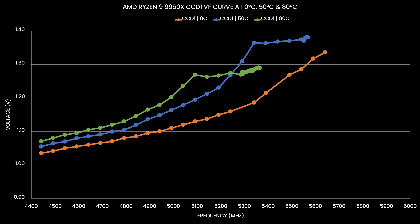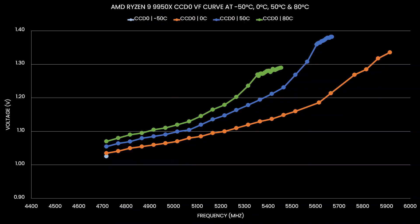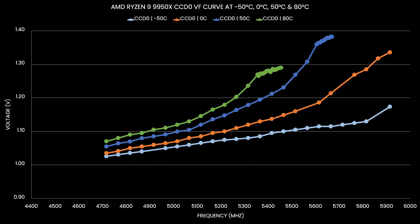This also holds true for CCD1 — at 1.2V we get almost 5.4 GHz at 0°C, but only 5 GHz at 80°C. The cool thing, literally, is that Precision Boost also scales with negative temperatures. Check out the VF curve at minus 50 degrees Celsius — at minus 50°C we get 5.8 GHz with only 1.13V. However, at 80°C, 1.1V gets us barely over 5 GHz.